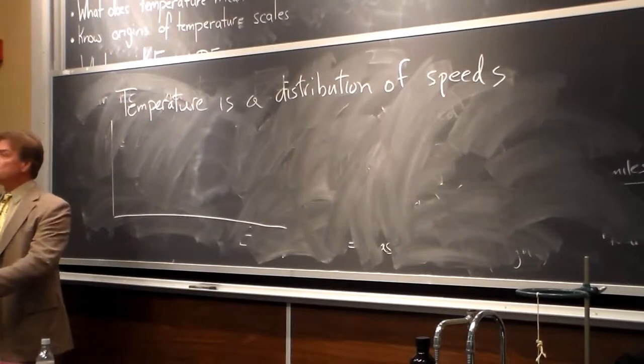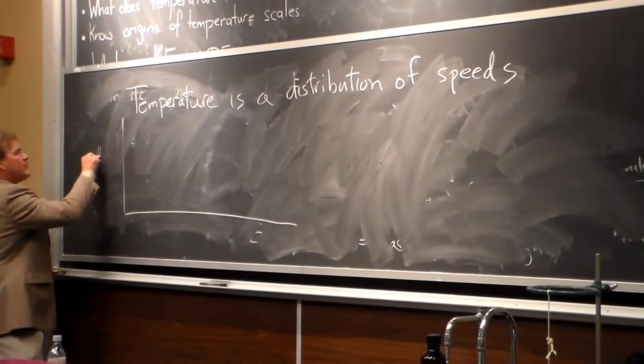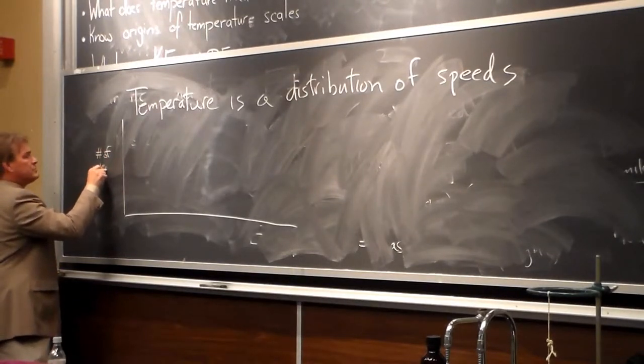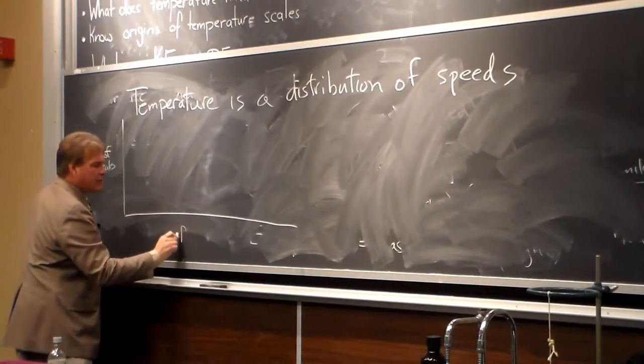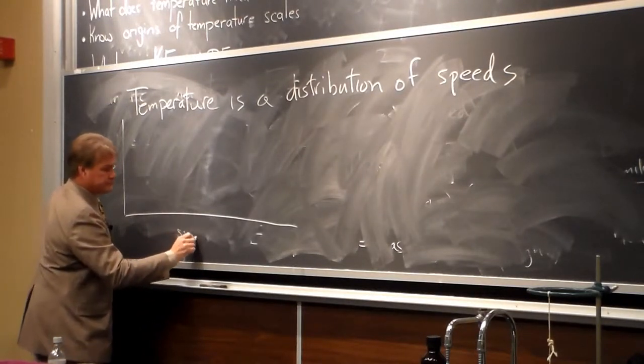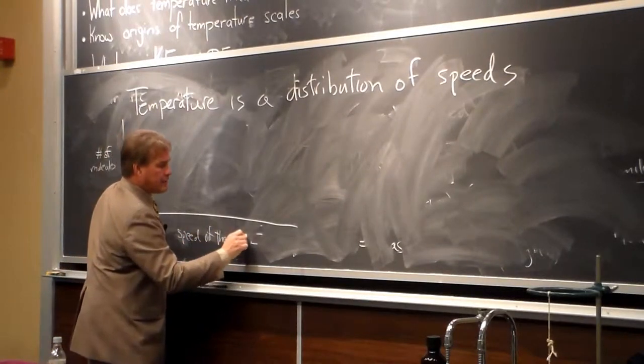Temperature is a distribution of speeds. So if here I make a graph, this is the number of molecules, and this is how fast they're going. Speed of the molecule.